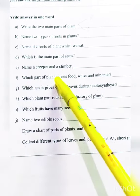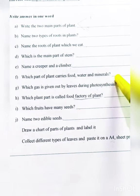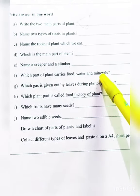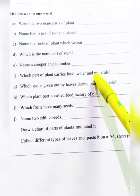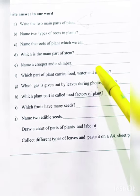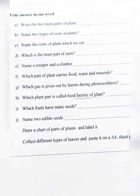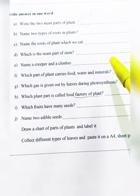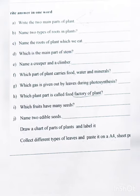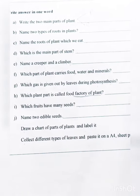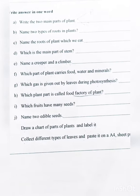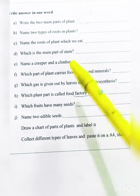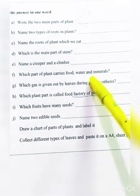Which part of the plant carries food, water and minerals? The stem carries food, water and minerals. The roots absorb water and minerals, and then the stem supplies all of these to the different body parts of the plant. Leaves are made with the help of this water.